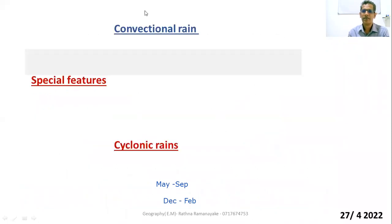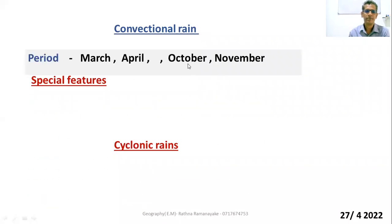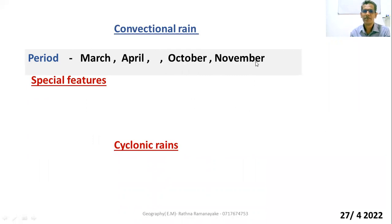Convectional rain. Sri Lanka gets convectional rain during the months of March, April, and October. Convectional rain is also known as intermonsoonal rain, and also thundershowers. These are other names given for convectional rain.